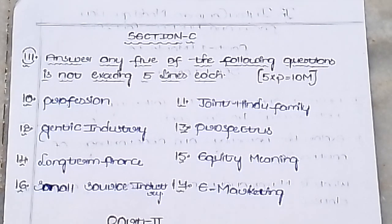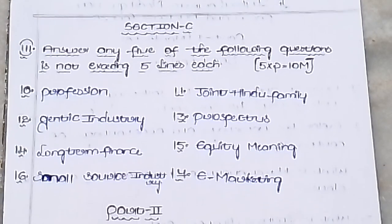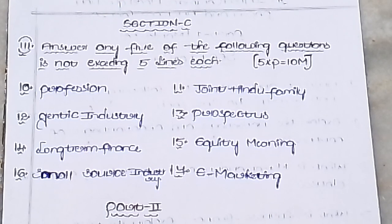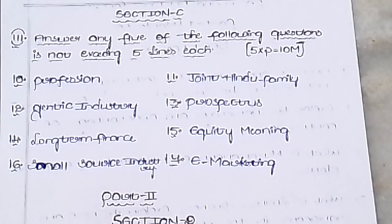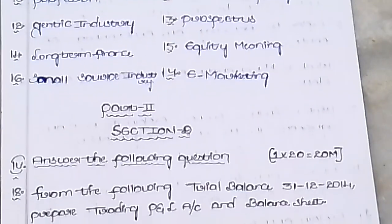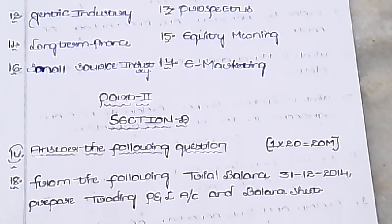Section C: Five marks each — ten marks total. Define or explain the following terms: profession, joint Hindu family, cottage industry, prospectus, long-term finance, equity, meaning of small-scale industry, sources, and e-marketing.